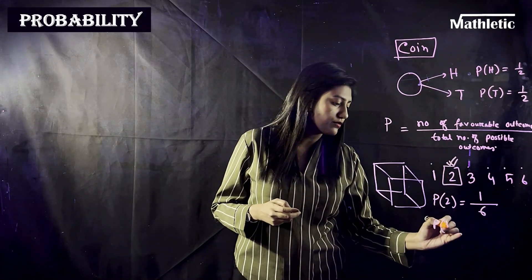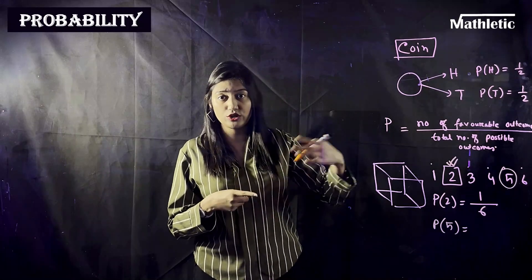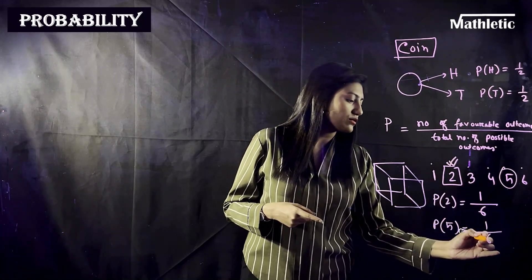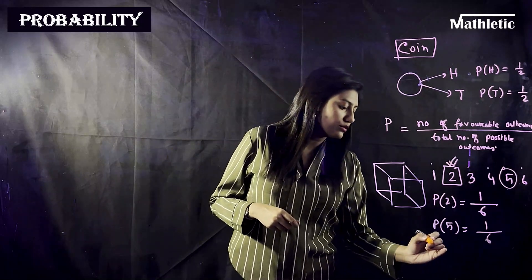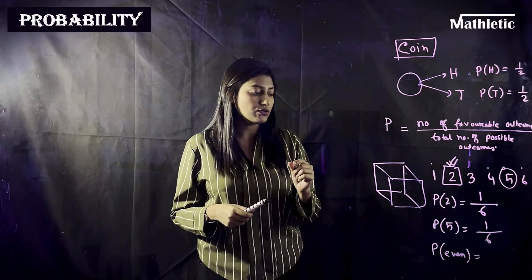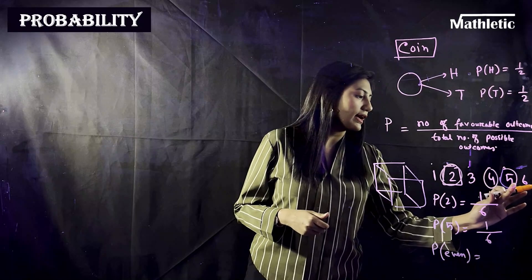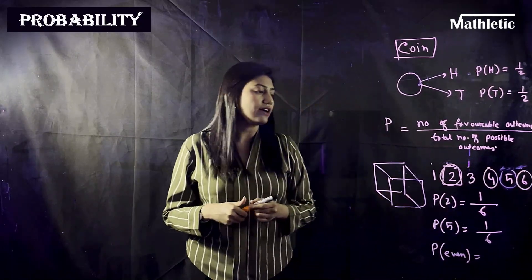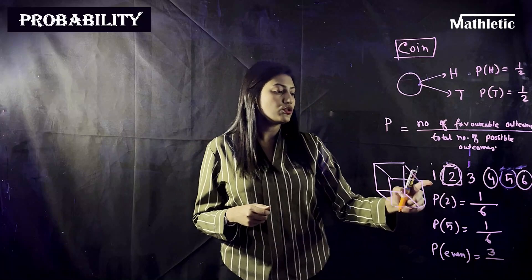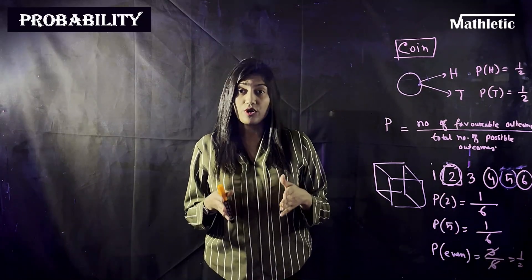Similarly, the probability of getting a five is also one-sixth, since there is only one five on the die. If you want to find the probability of getting an even number, the even numbers are two, four, and six — that's three favorable outcomes out of six total, giving a probability of three-sixths, which simplifies to one-half.